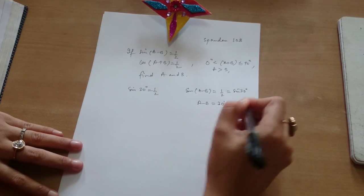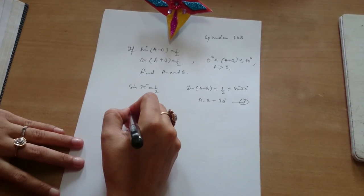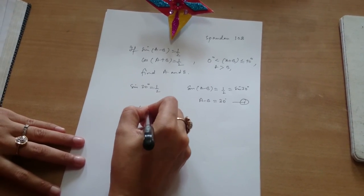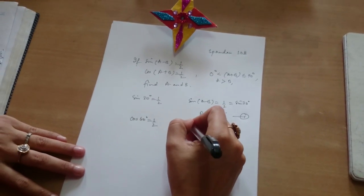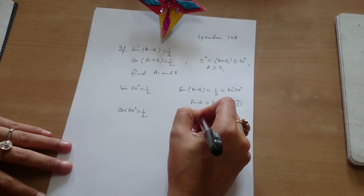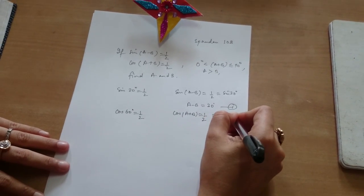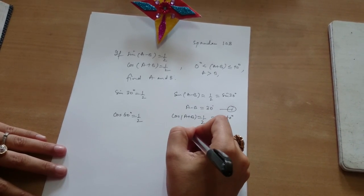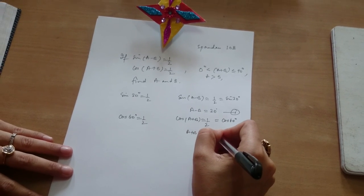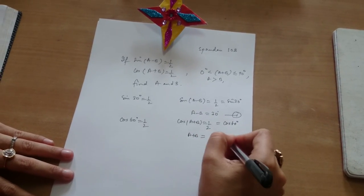From this we will get that a minus b is equal to 30 degrees. And in the second one, cos(a + b) is equal to half. So cos 60 degrees is half, and I can replace it by cos 60 degrees. So a plus b will be 60 degrees.